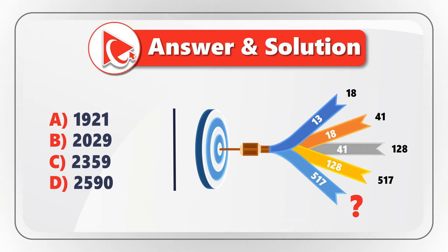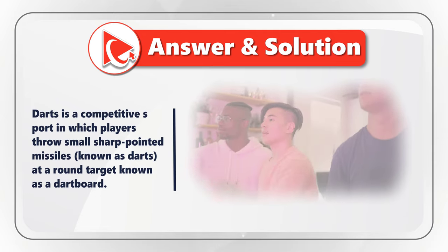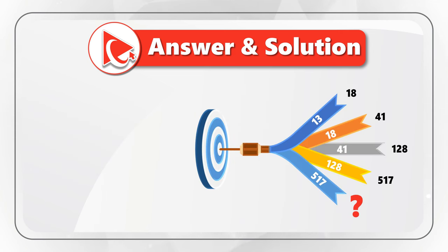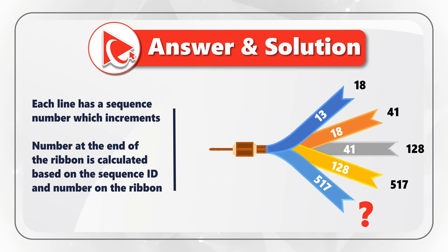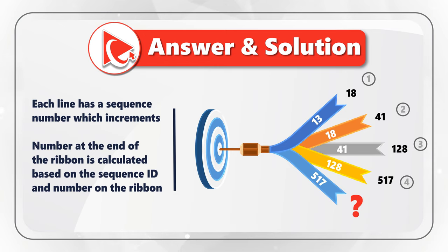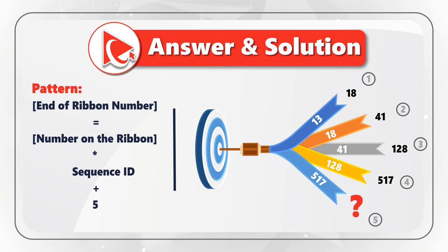To answer this question, let's understand what we're dealing with. Darts is the competitive sport in which players throw small sharp-pointed missiles, known as darts, at a round target known as a dartboard. Our dart is unique because it has ribbons. There is a number on the ribbon and a calculated number at the end of the ribbon. To complete the calculations, let's assign each ribbon a unique number — ribbons 1, 2, 3, 4, and 5.